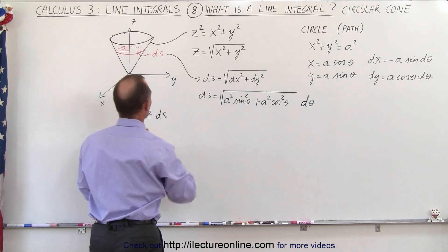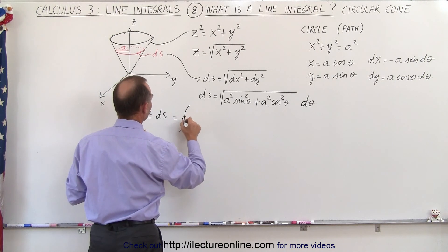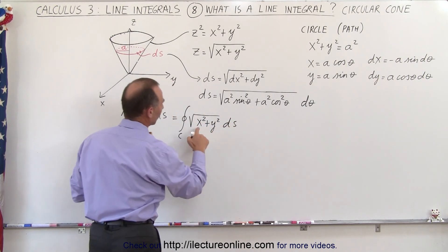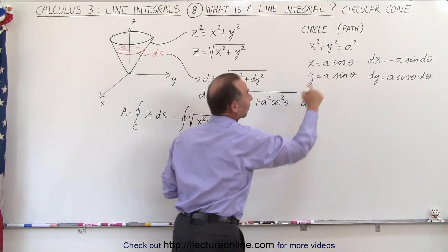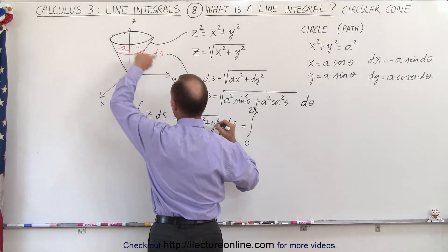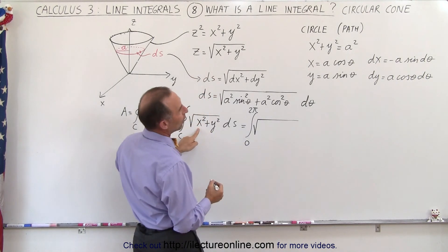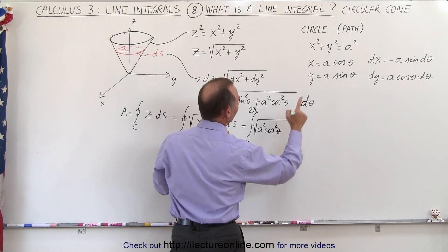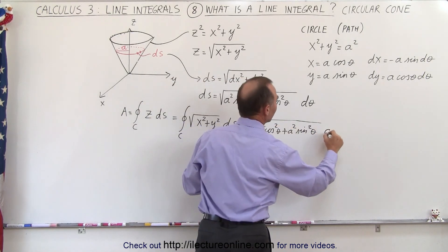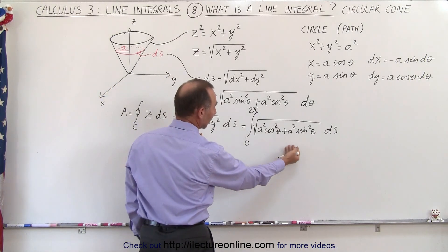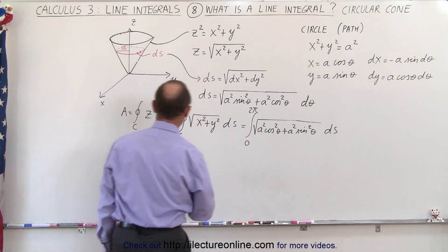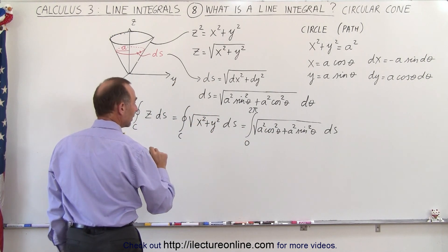Now we're going to replace z by what z is equal to. This is equal to the integral around the curve — instead of z we write the square root of x squared plus y squared times ds. Now we replace x squared and y squared using the parametric equations, so we integrate from 0 to 2 pi: the square root of a squared times cosine squared theta plus a squared times sine squared theta. We can factor out a squared, and cosine squared theta plus sine squared theta equals 1, so this simply becomes the square root of a squared, or simply a.